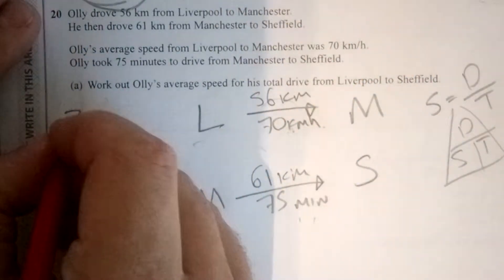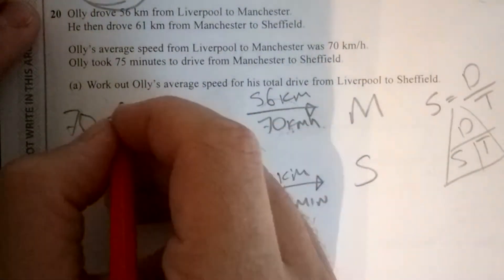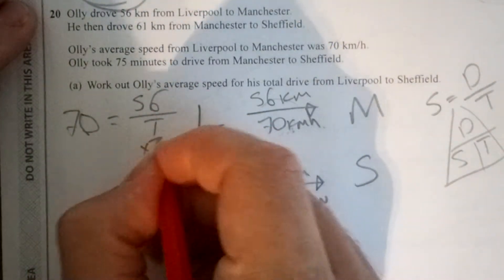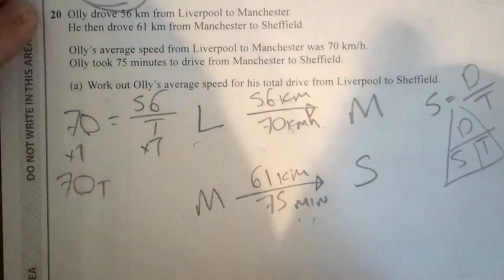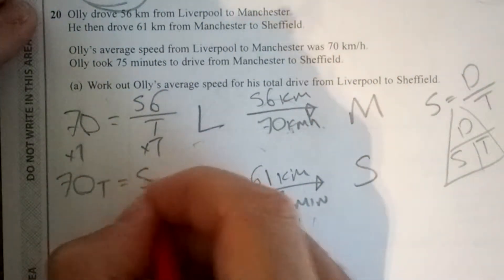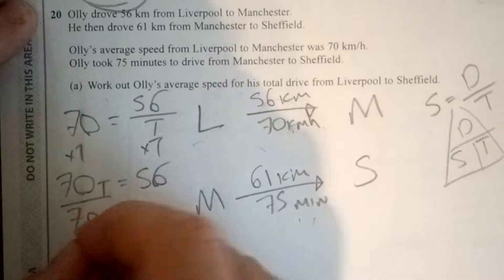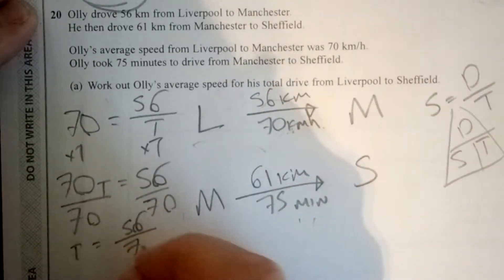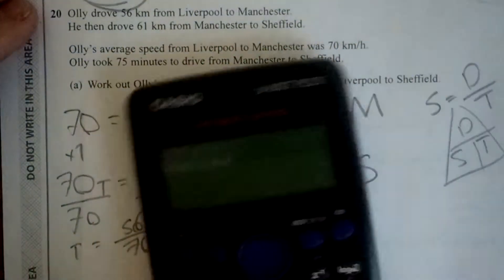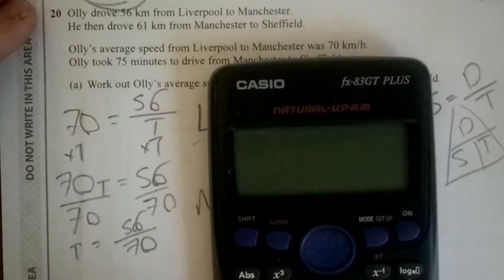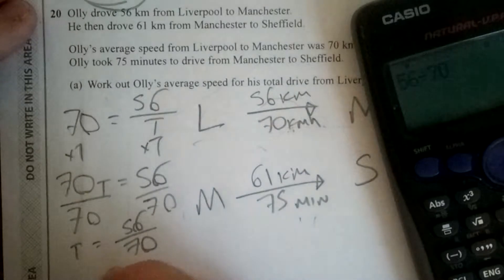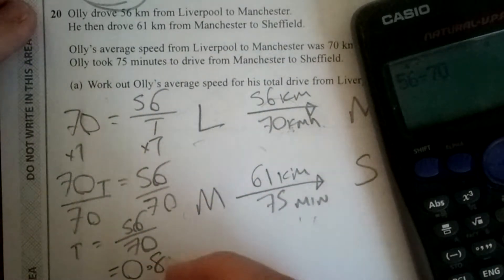Speed is 70, distance is 56, so 70 equals 56 over time. Rearranging: multiply both sides by time, giving 70 times time equals 56, then divide by 70. So my time is 56 over 70. Typing that into my calculator: 56 divided by 70 equals 0.8. And remember, this is in hours.